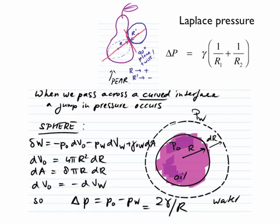The difference in pressure is the interfacial tension between the two respective phases times 1 over R1 plus 1 over R2. Now the question is, what is 1 over R2?